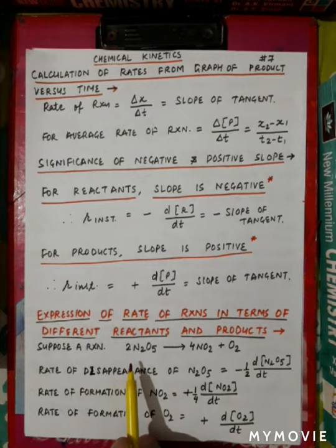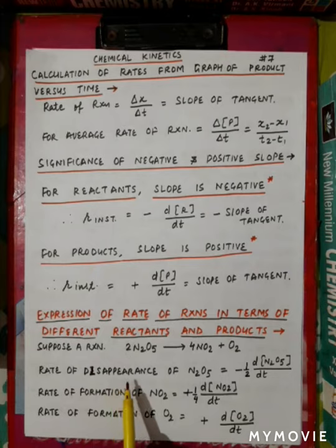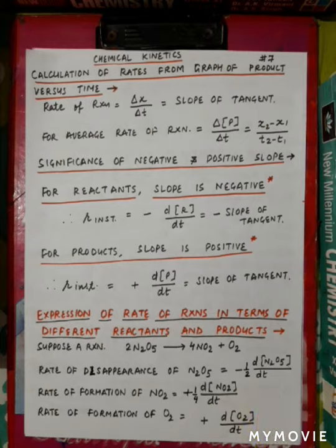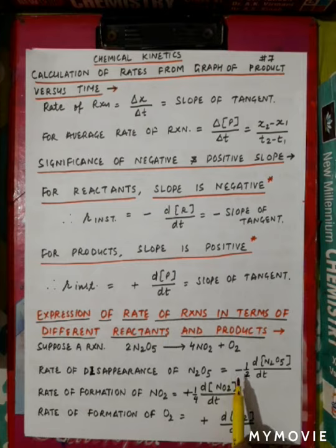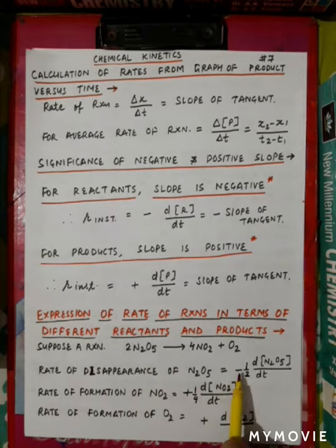There is a reaction in which two dinitrogen pentoxide gives four nitrogen dioxide and oxygen. You have to write the rate of disappearance of dinitrogen pentoxide, which is equal to the molar concentration of N2O5 upon time. The rate of reaction is molar concentration of reactant or product upon time, and the sign is negative or positive depending upon whether it is a reactant or product. Because N2O5 is a reactant, the concentration decreases with time, so we use a negative sign.